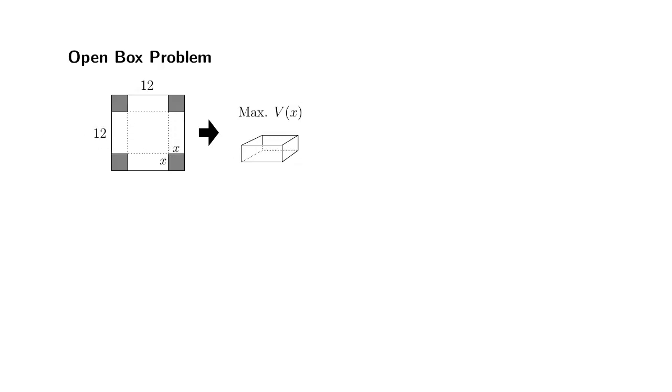So its dimension is going to be, you're going to start with the 12 units and then you take away X's on both sides. So 12 minus 2x will be the length of this side here. And since it's square, so this is exactly the same.